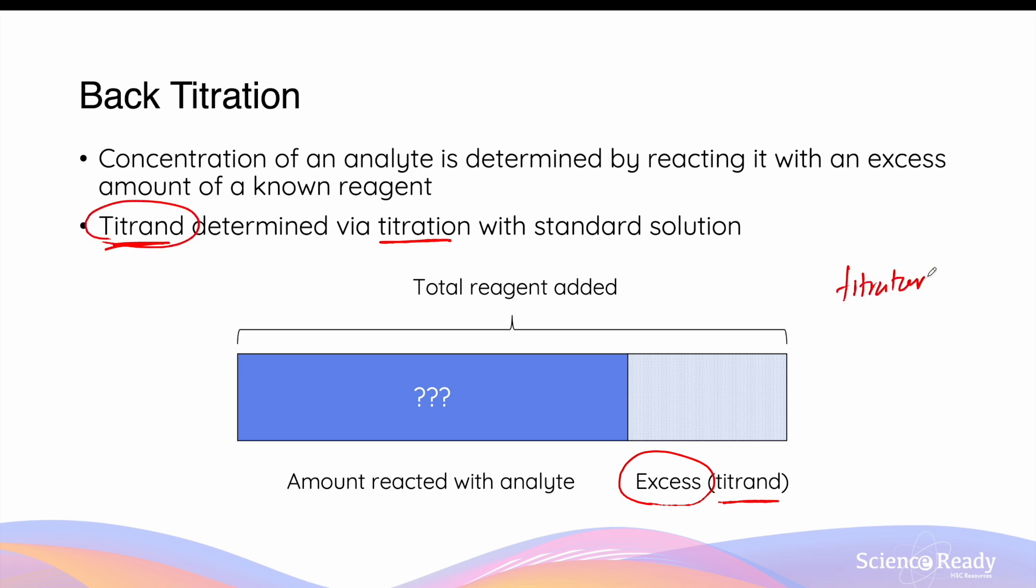So from titration, we are trying to figure out the amount of titrant, that is the amount of moles of the reagent that we added that's in excess. If we know the total amount of reagent that we added in the beginning, we can subtract the amount that was left in excess to find out the amount that reacted with the analyte. If we know the ratio of reaction, we can then use that number to determine the quantity of the analyte.